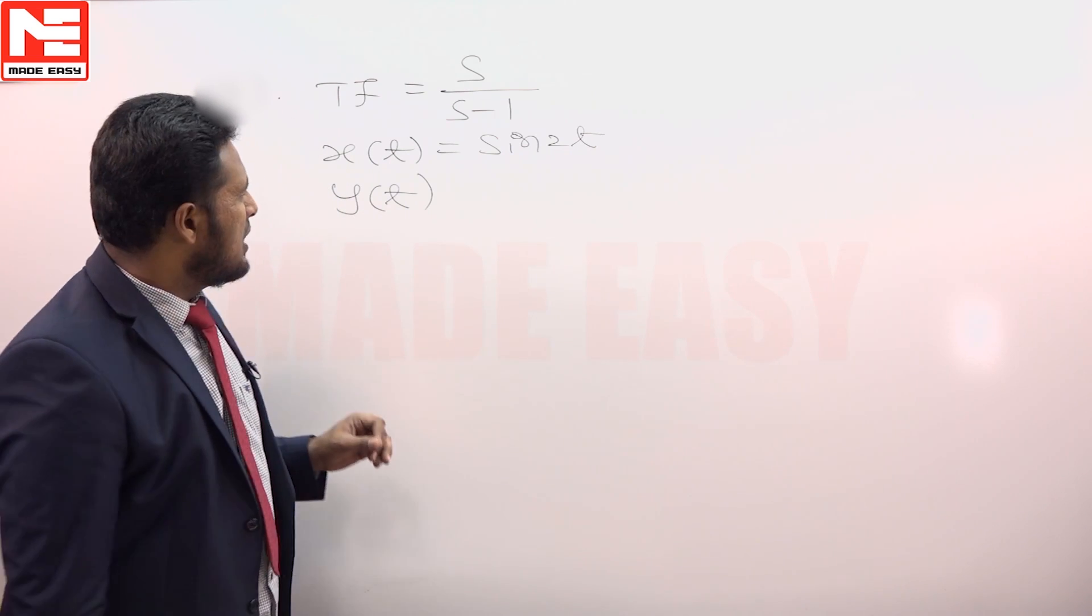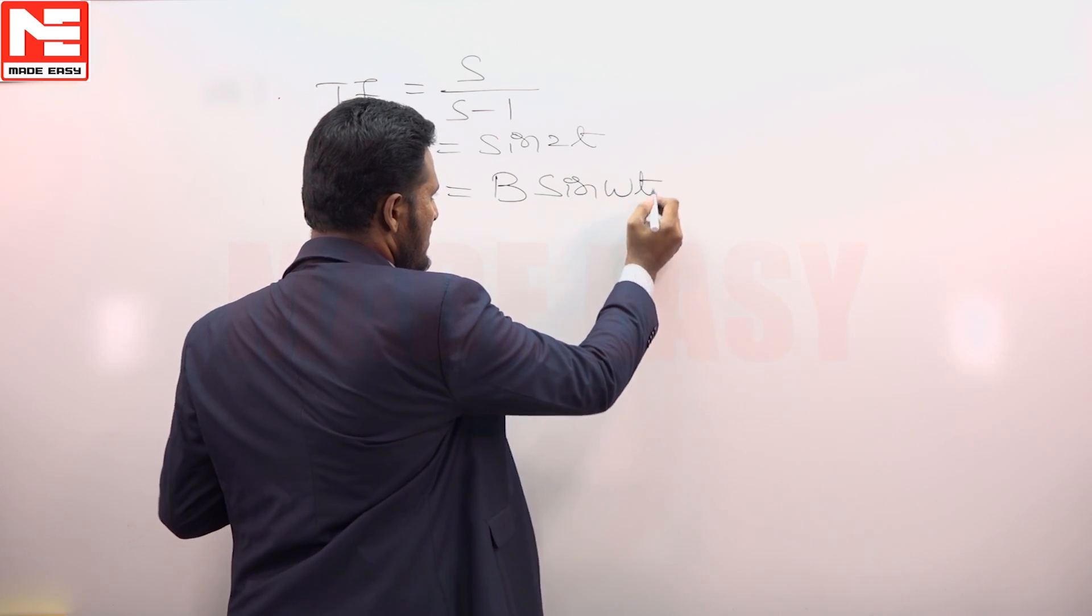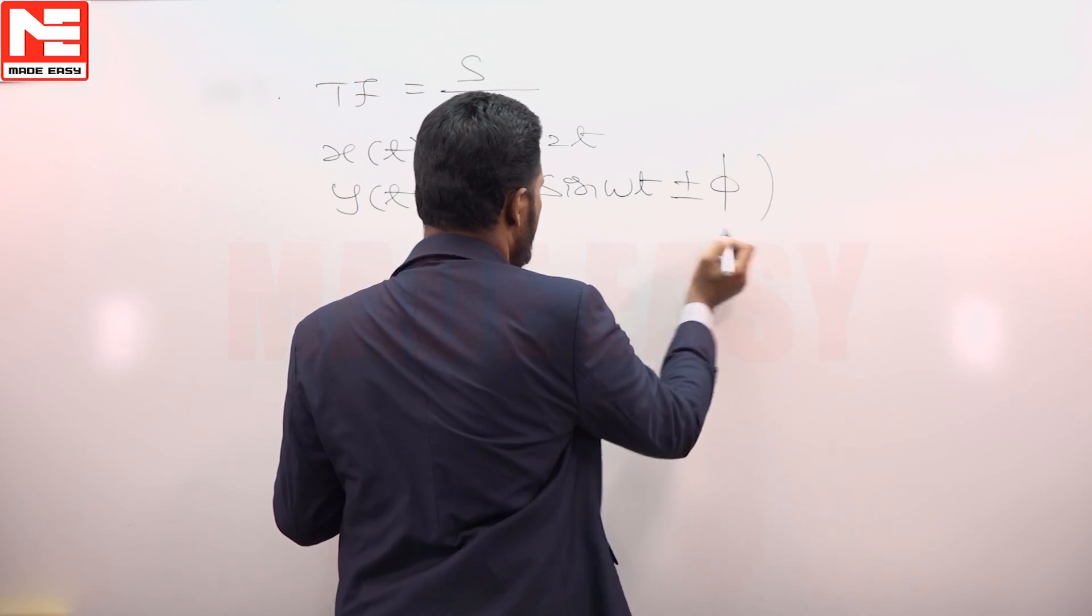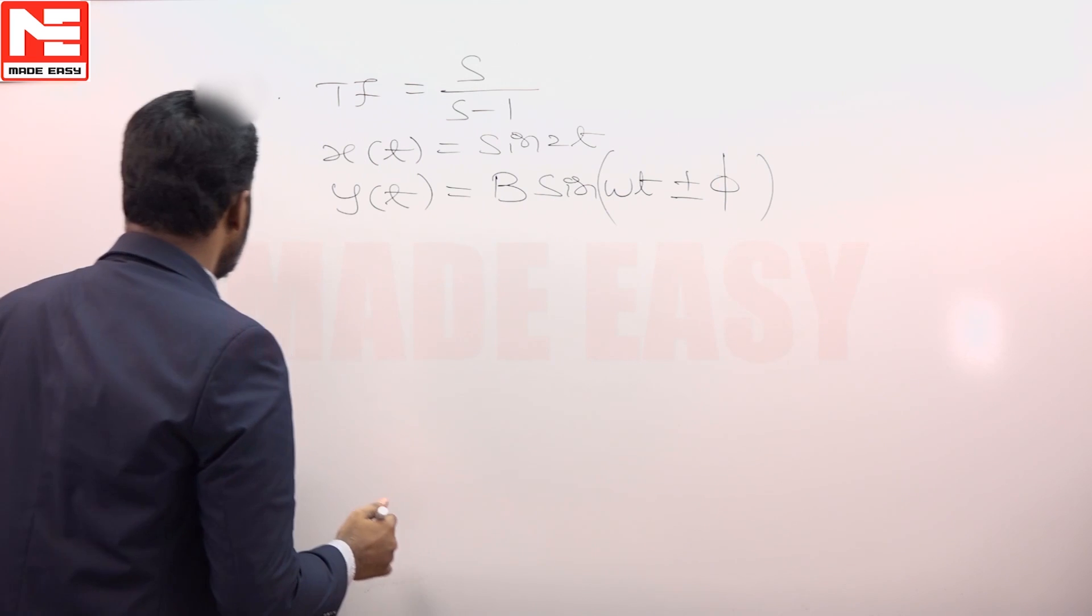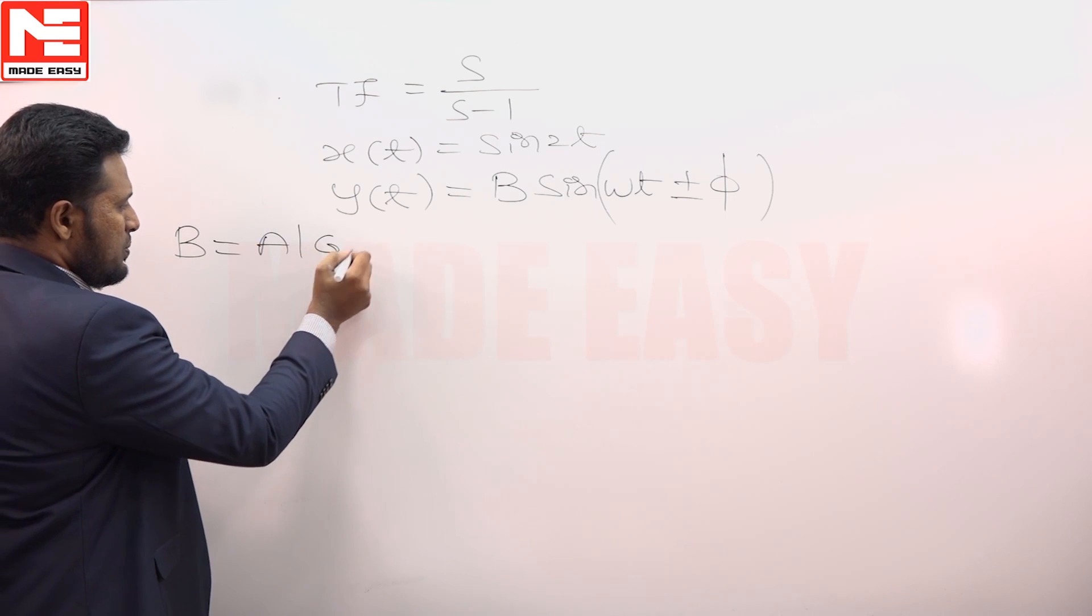Considering the output of an LTI system for sinusoidal input to be B sin(ωt ± φ), where B becomes A times the magnitude of G(jω).